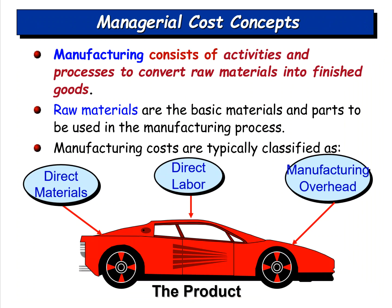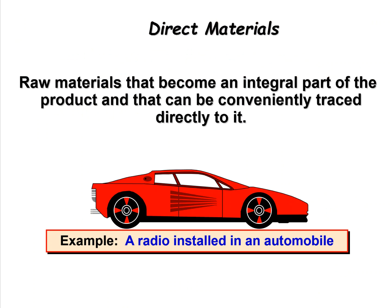There are basic cost concepts in manufacturing we need to review. First are product costs — all the costs that go into manufacturing a specific product. We break those into direct materials, direct labor, and manufacturing overhead. Adding those three together gives us the total product cost. Direct materials are the basic materials that go directly into manufacturing — for a car, that would be tires, a radio, steering wheel, frame, door panels, lights — materials you can specifically trace to that car.